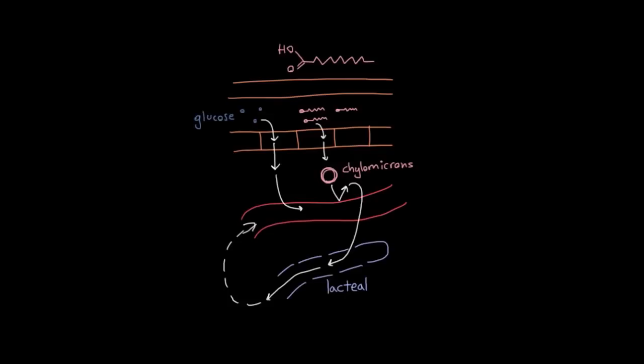So here we have our third important function of the lymphatic system, which is to transport things which didn't originally come from the blood, to transport them into the blood. And we can sort of generalize it a little bit and say that maybe a little further away from the small intestine somewhere else, you have some cells that are hanging out.